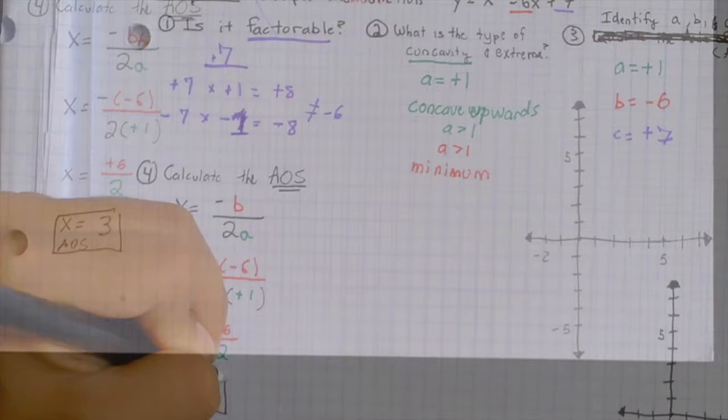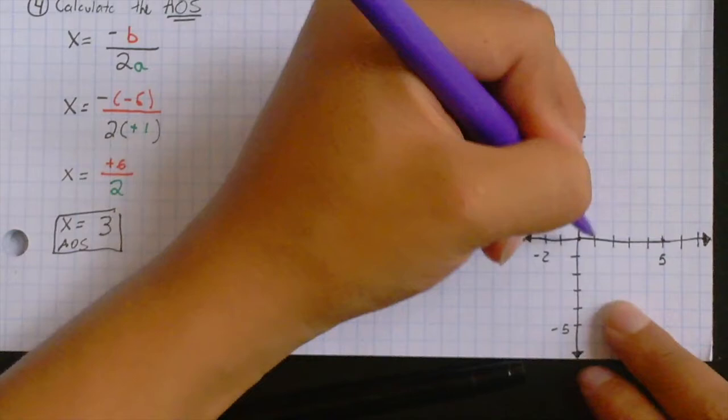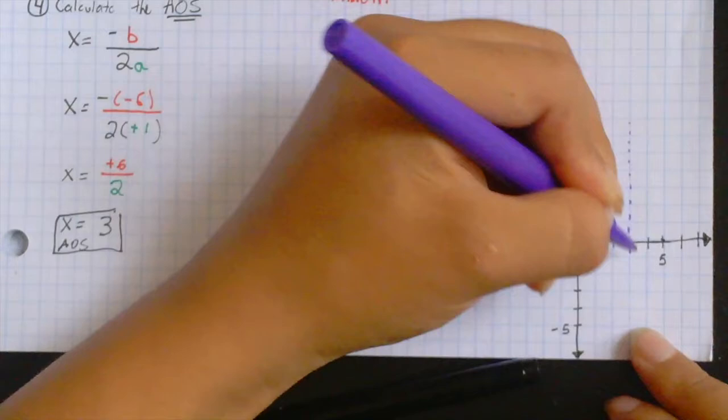Now, when we graph the axis of symmetry, we go to 1, 2, 3, when x equals 3, and draw that dotted line. When x equals 3.